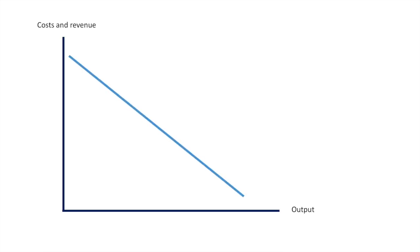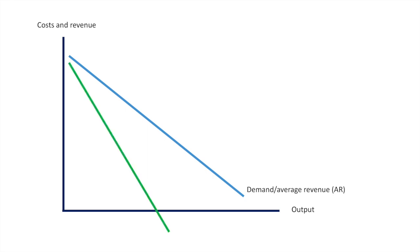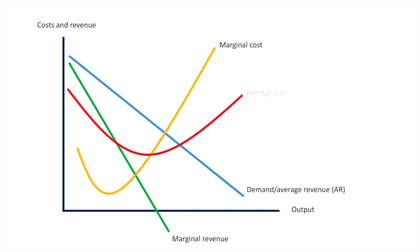Now that we understand the characteristics of a monopoly, let's draw the diagram. We first draw in a downward sloping demand curve or average revenue curve, because a firm has price-making ability and would need to lower their prices to sell more of a product. Monopolies cannot charge any price they like as consumers wouldn't necessarily always pay it. Second, the marginal revenue has twice the slope of the demand curve. Third, we add in a marginal cost curve, and finally the U-shaped average cost curve.